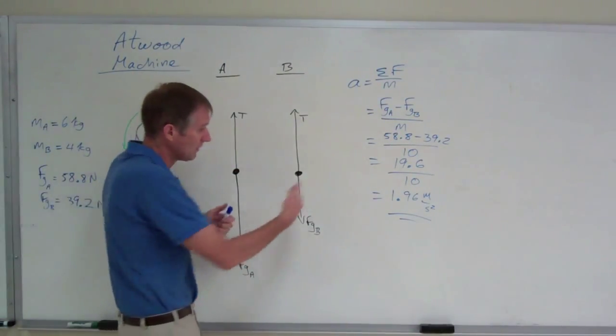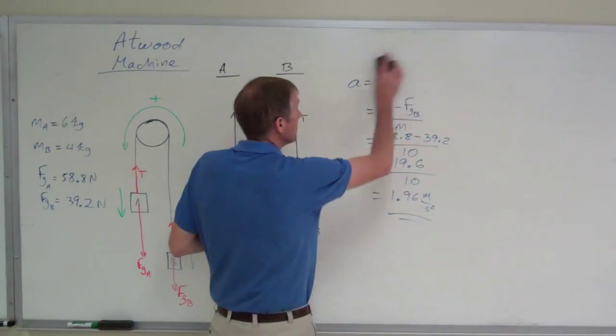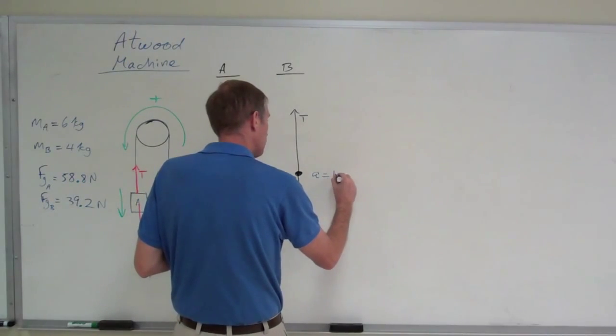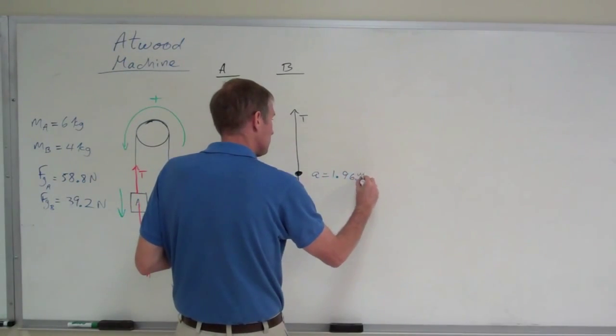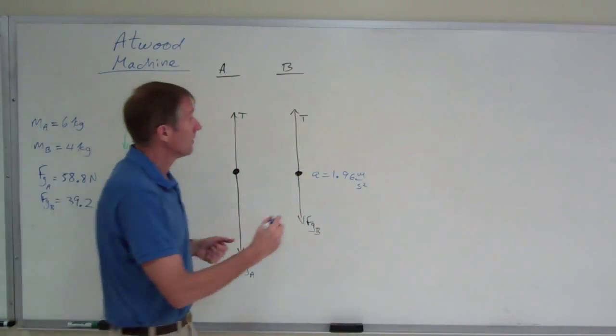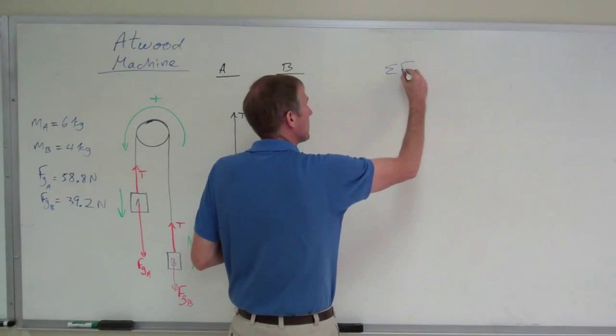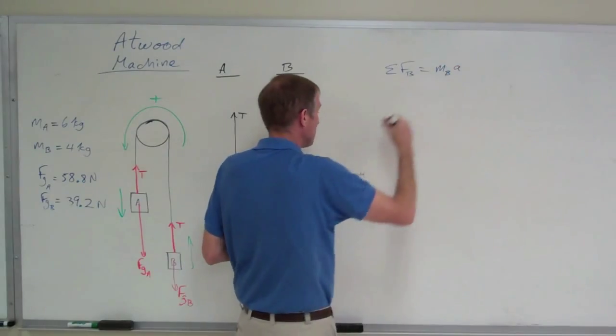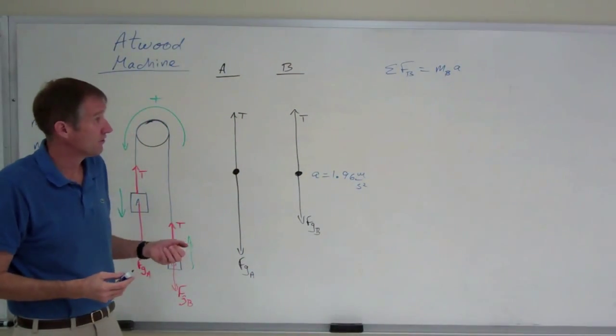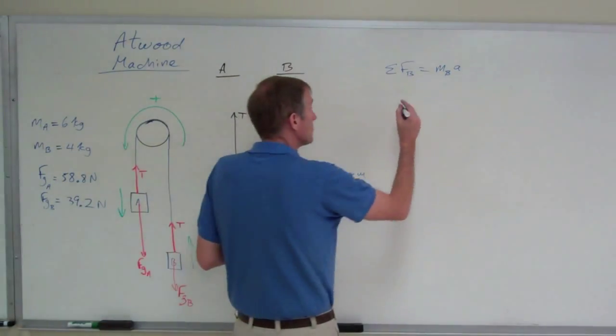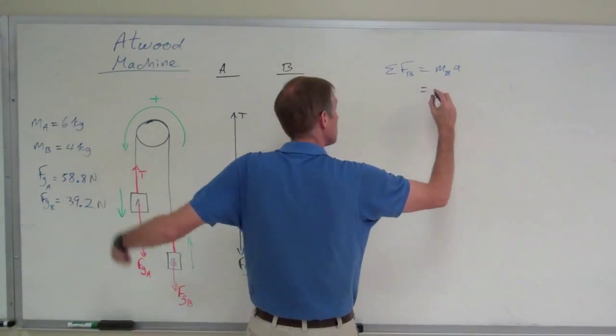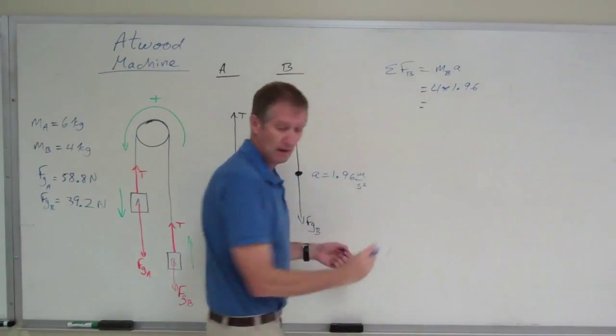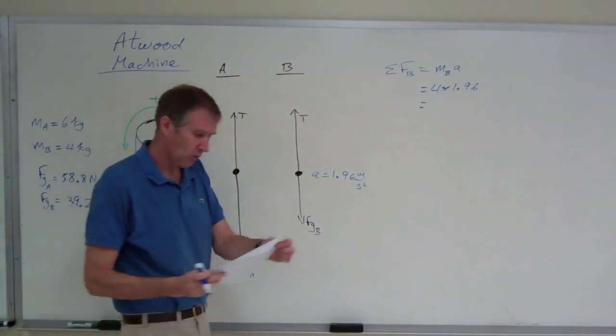So I'm going to just look at block B. I'm going to erase this. I know that block B has an acceleration of 1.96 meters per second squared because I just calculated it. The net force acting on block B only is the mass of B times the acceleration of the entire system because B is part of that system. So that is 4 kilograms times 1.96, and that came out to be 7.84.